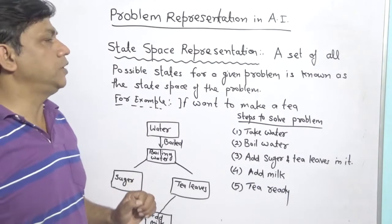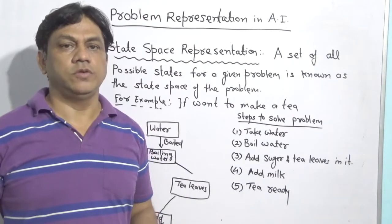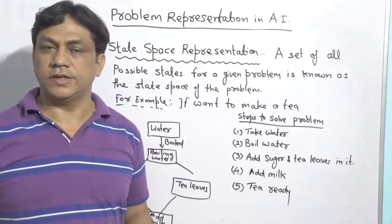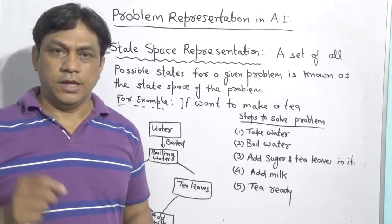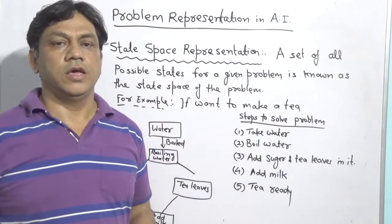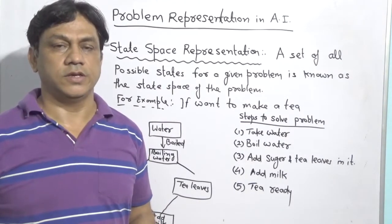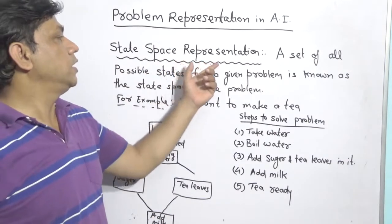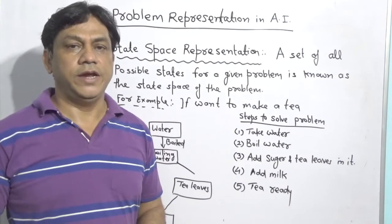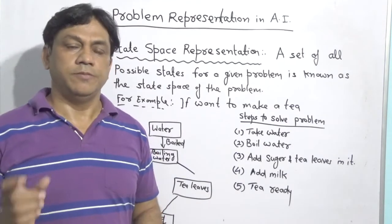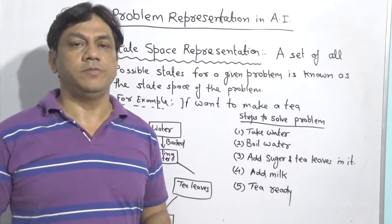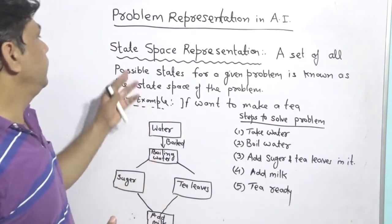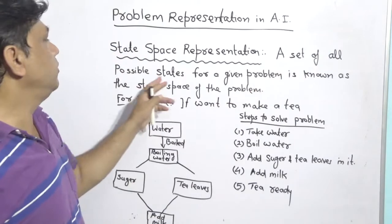We have seen problem representation in AI — what it is, what the need is, the steps, and how to generate a system for problem solving. Now we will see the methods of problem representation. One important way is state space representation, in which we define what the different intermediate states are between the problem and the solution. A set of all possible states for a given problem is known as the state space of the problem.